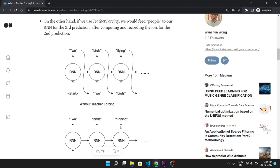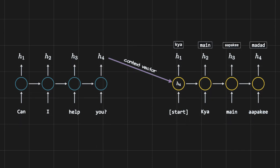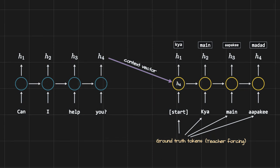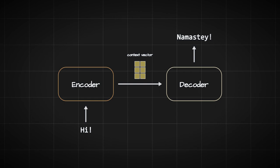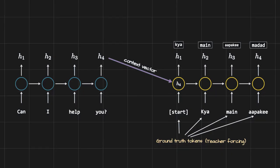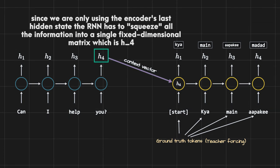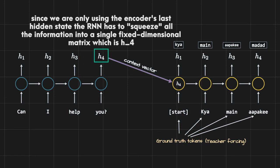Teacher forcing can only be used during training since we only have ground truth tokens then. During inference, without ground truth tokens, we must use the predicted token strategy. We have successfully translated the English sentence to Hindi using the encoder-decoder architecture — but the problem is how we create the context vector. We are simply using the encoder's last hidden state, forcing the RNN to squeeze all information from the English sentence into a single fixed-dimensional matrix.